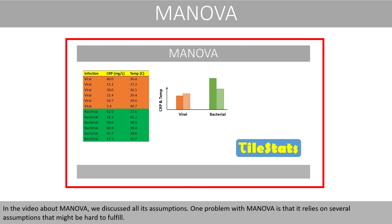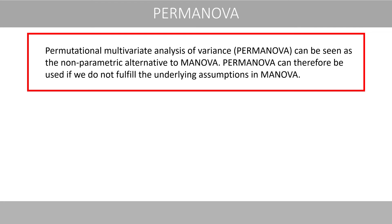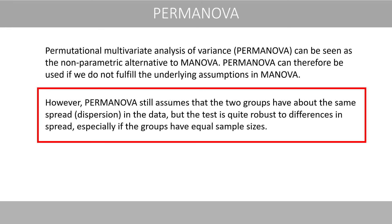In a video about MANOVA, we discussed all its assumptions. One problem with MANOVA is that it relies on several assumptions that might be hard to fulfill. Permutational multivariate analysis of variance can be seen as the nonparametric alternative to MANOVA. PERMANOVA can therefore be used if you do not fulfill the underlying assumptions in MANOVA. However, PERMANOVA still assumes that the two groups have about the same spread or dispersion in the data, but the test is quite robust to differences in spread, especially if the groups have equal sample sizes.